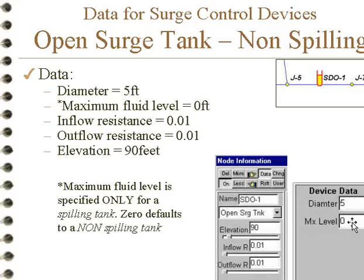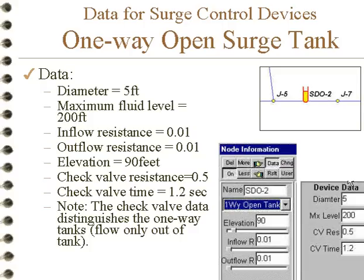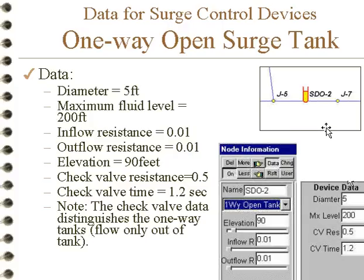For a non-spilling surge tank, the maximum level is just zero, so the liquid can go up as high as it wants. A one-way surge tank is a device with a check valve that allows flow only to go into the system. Under normal steady-state conditions, the head would be too high and flow would be spilling out. As pressure drops to the point where the head in the line is below the tank level, it will open up and prevent cavitation. To designate this device, we put in check valve data — resistance and time — and the program will interpret this as a one-way open surge tank, or feed tank.